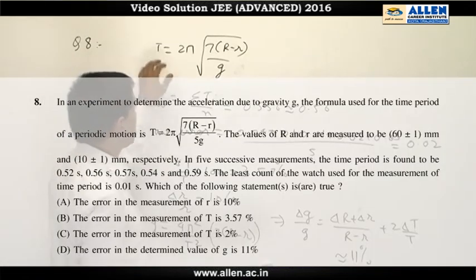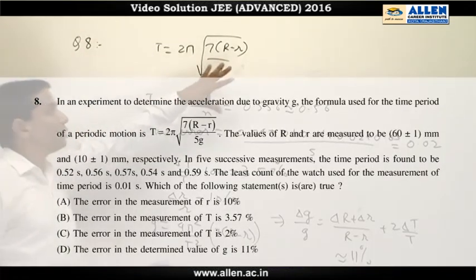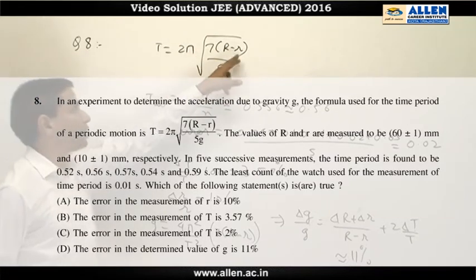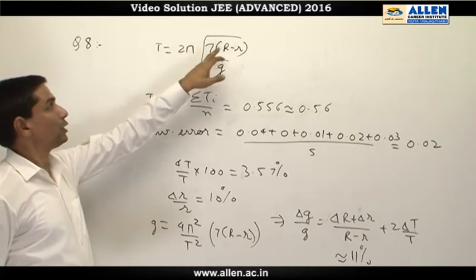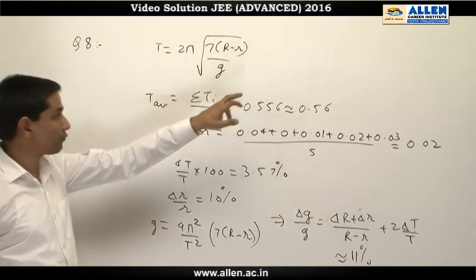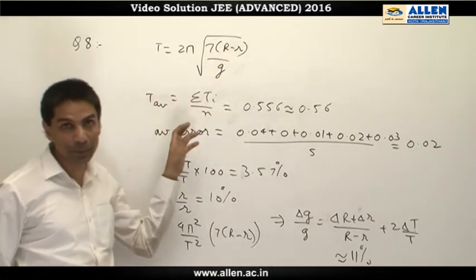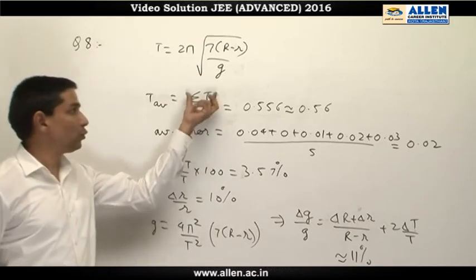For this particular question, the formula for time period of the pendulum has been given: 2π√(7R - r)/g. The error in time period has to be found out. Error in R and small r are given. To find error in time period, we go by the average time first.